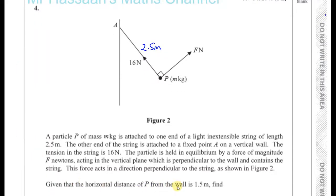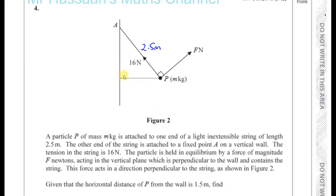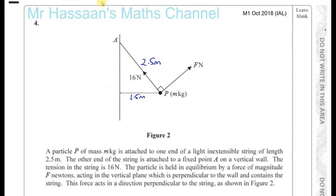Given that the horizontal distance of P from the wall is 1.5 meters. So this horizontal distance from P to the wall is 1.5 meters. Find the value of f and the value of M. So now this thing has a weight which acts vertically down, and that weight is mg. We need to find M and f in this question.